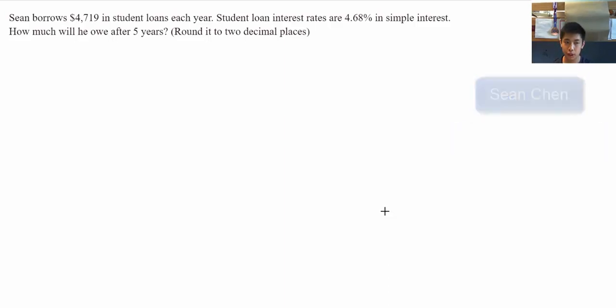Now the question is, Sean borrows $4,719 in student loans each year. Student loan interest rates are 4.68% in simple interest. How much will he owe after 5 years? Rounded to 2 decimal places.